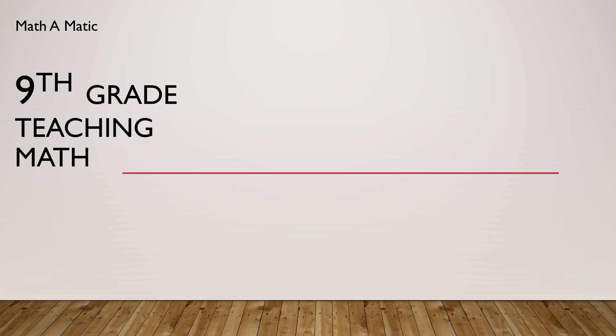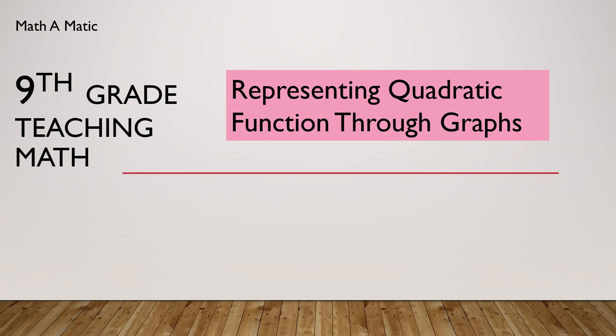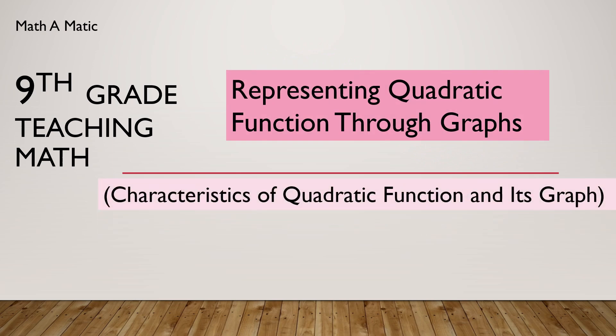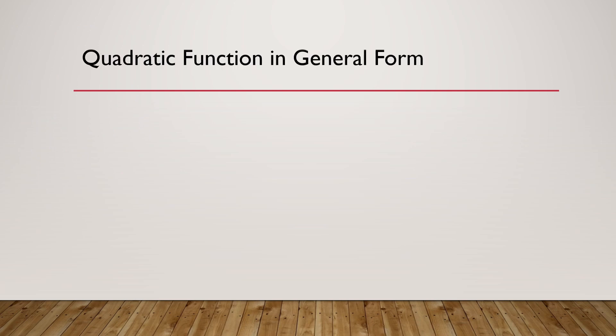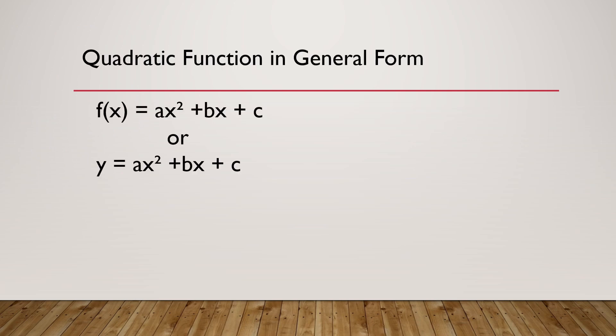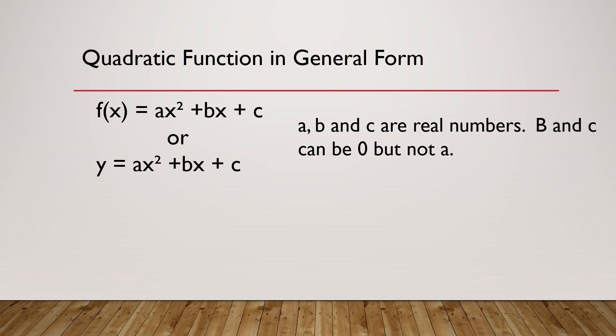Hi, this is Mrs. A of Math-A-Matic. Today you're going to learn about the characteristics of the graph of quadratic functions. The quadratic function in general form is f(x) = ax² + bx + c, or y = ax² + bx + c, where a, b, and c are real numbers. b and c can be zero, but not a.